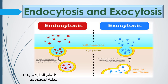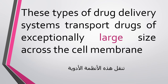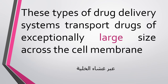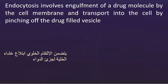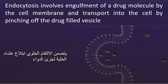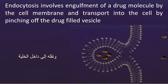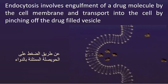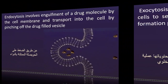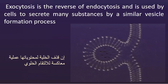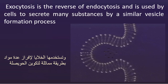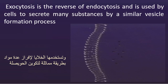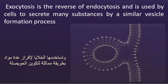Endocytosis and exocytosis. These types of drug delivery systems transport drugs of exceptionally large size across the cell membrane. Endocytosis involves engulfment of a drug molecule by the cell membrane and transport into the cell by pinching off the drug-filled vesicle. Exocytosis is the reverse of endocytosis and is used by cells to secrete many substances by a similar vesicle formation process.